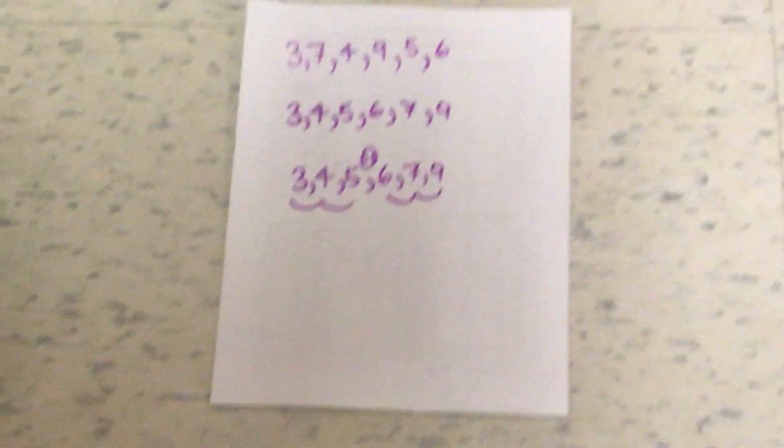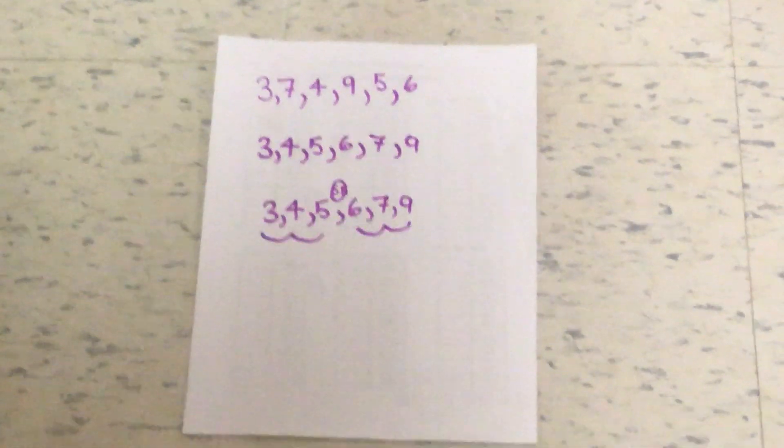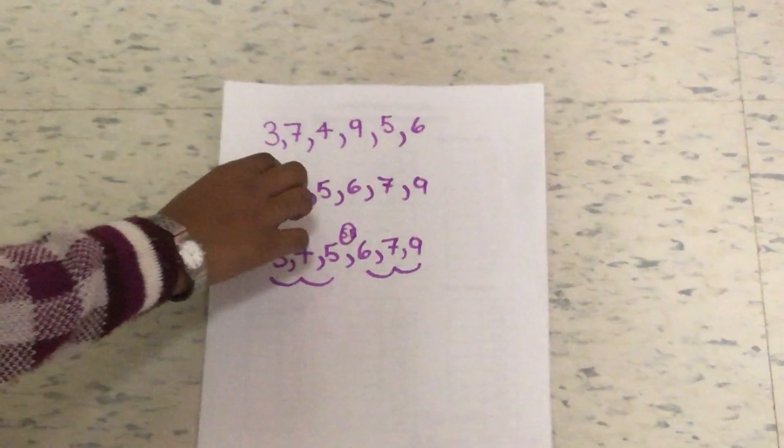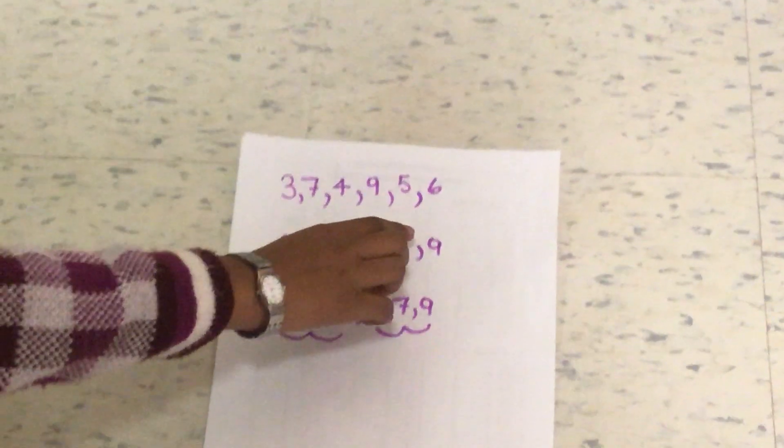These numbers are all mixed up. You have to put the numbers in order from least to greatest, which is 3, 4, 5, 6, 7, and 9.